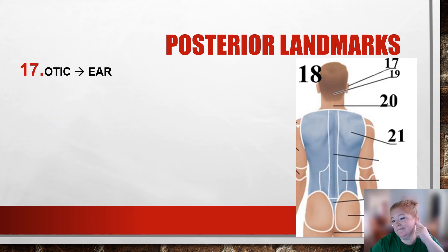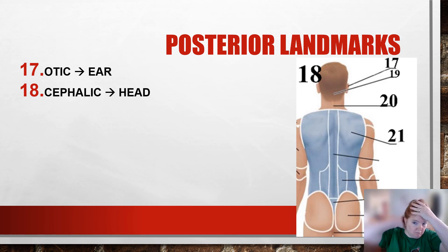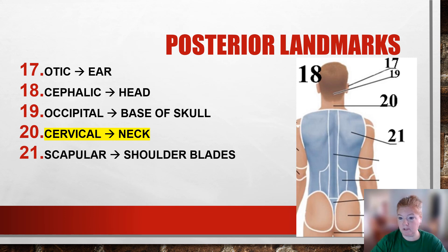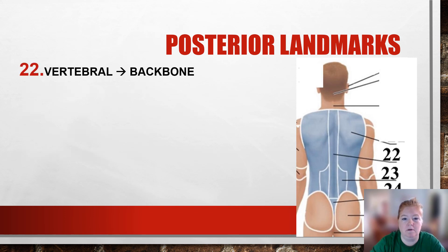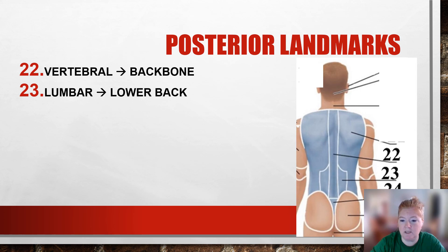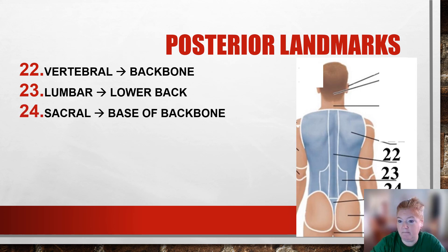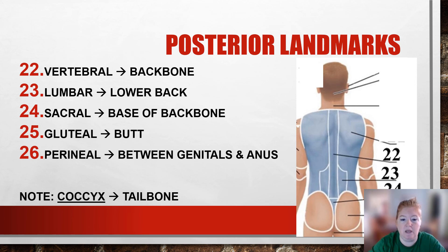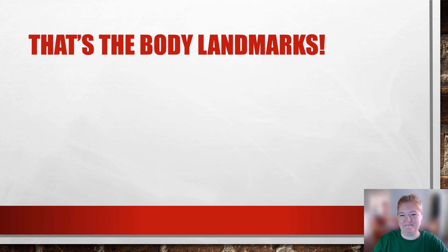Plantar is the bottom or sole of your foot. We also have otic, cephalic, and occipital — right back here on the head. Scapular refers to your shoulder blades, which you can feel sticking out. Vertebral is the spine. Lumbar is your lower back. Sacral is the base of your backbone. Gluteal is your glutes — your butt. Perineal is the area between your genitals and your anus. And the coccyx is your tailbone. So there you have it — body landmarks.